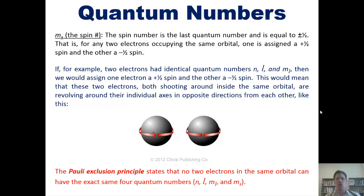the Pauli exclusion principle says that no two electrons in the same orbital, in the same atom, can have the exact same four quantum numbers, n, L, m sub L, and m sub s. Does that make sense? I hope so.